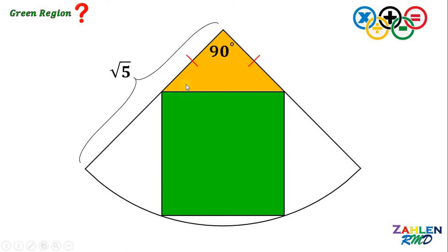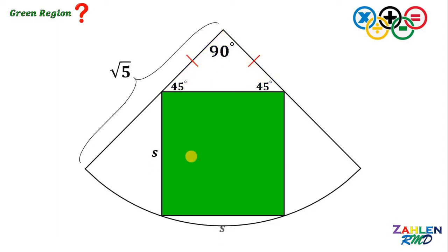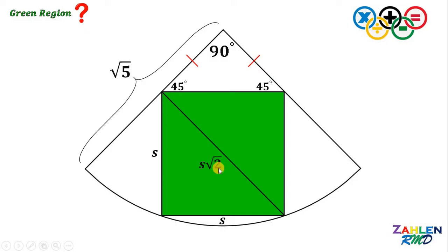It follows that the measure of these two acute angles must be 45 degrees. Now don't forget our goal: to find the area of this green region, or simply the area of the square. Let S be the side of the square. Since we know the side length, we can find the diagonal using the Pythagorean theorem or the property of the 45-45-90 right triangle — the diagonal measures S multiplied by the square root of 2.